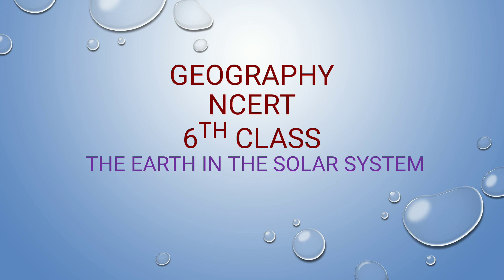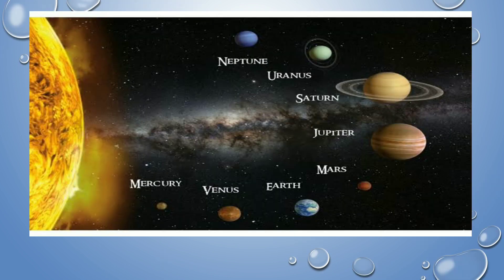Hello friends, good morning. With this we start a new NCRT series on geography from class 6 to class 12. Today we will cover the topic of the solar system, covering major important points: constellations, celestial bodies, planets, Earth, galaxies, asteroids, and meteoroids. These NCRTs are majorly useful for competitive exams, UPSC prelims and mains, and civil services and state service examinations.